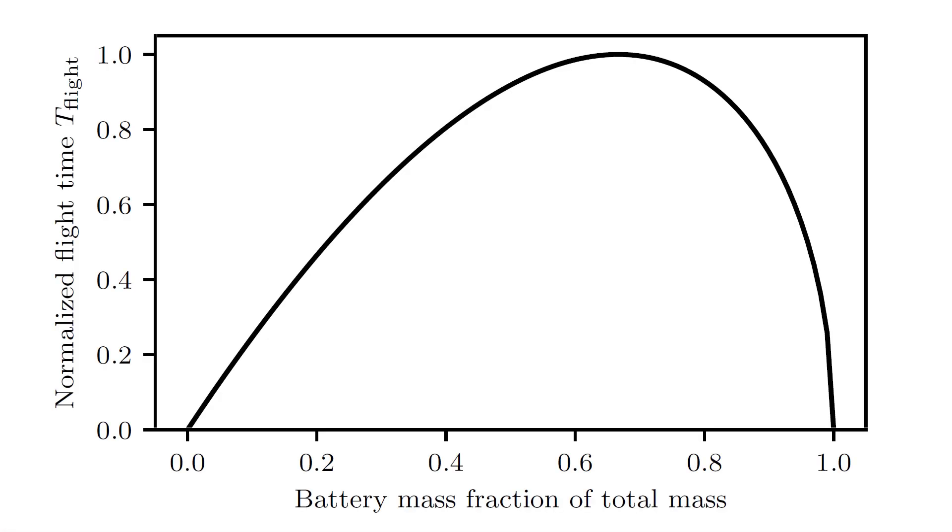Shown here is a plot of how the flight time of a battery-powered multirotor changes as we add more battery. We see that there is a fundamental upper bound to the flight time with respect to the battery we add, which occurs when the battery mass is about two-thirds of the total mass. We normalize the flight time with respect to this upper bound.